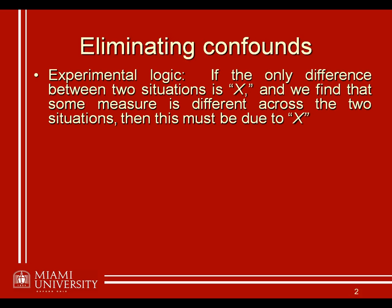First of all, we need to understand the very basics of experimental logic, and it goes like this: if the only difference between two situations is some factor X, and we find that the measure is different across these two situations, then it must be due to this factor X that we've manipulated. If there's only one key difference between two situations, then to the extent that human behavior differs, we can use good logical reasoning to say the difference must be due to that one thing. That's really all an experiment is trying to do.